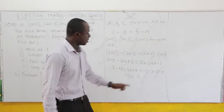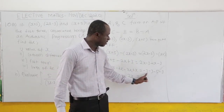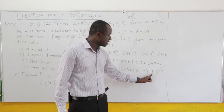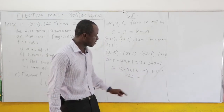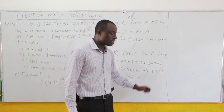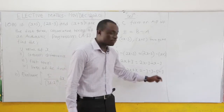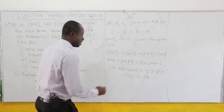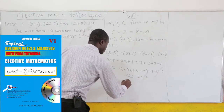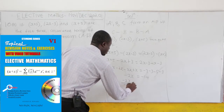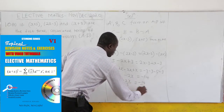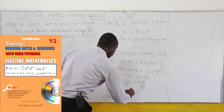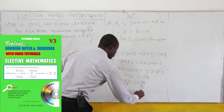Now collecting the constants: on the left we have 5 plus 3 equals 8, and on the right negative 3 minus 3 equals negative 6. Solving gives negative 2x equals negative 14, so x equals 7.